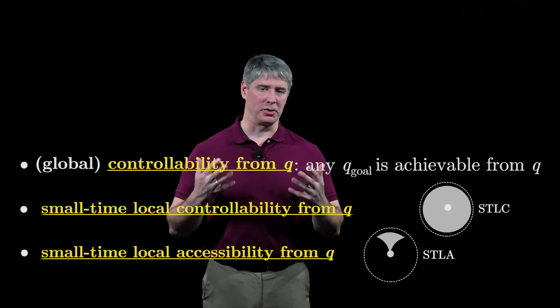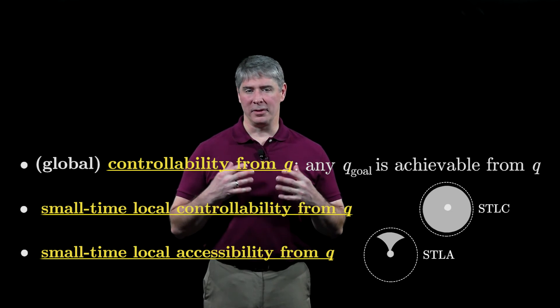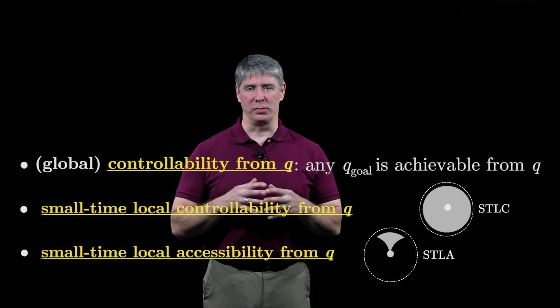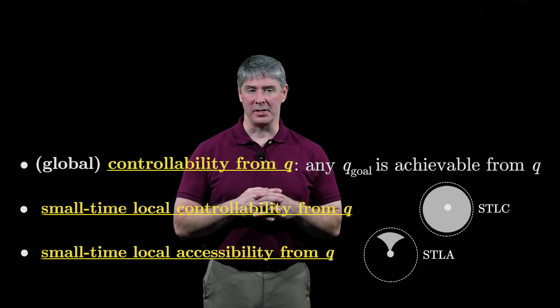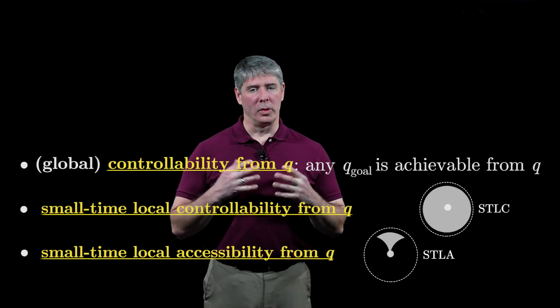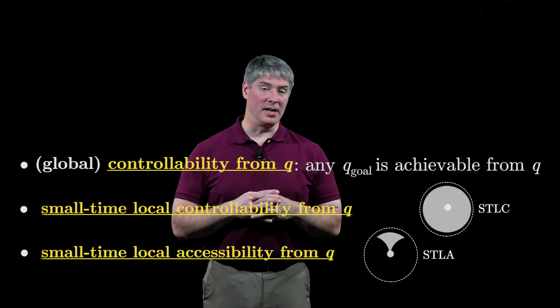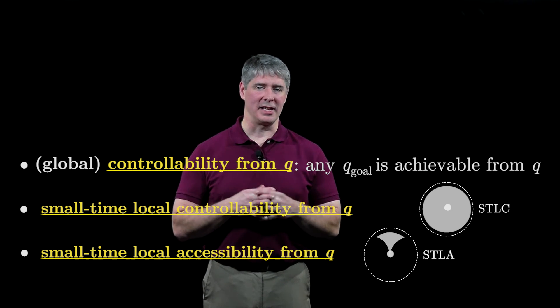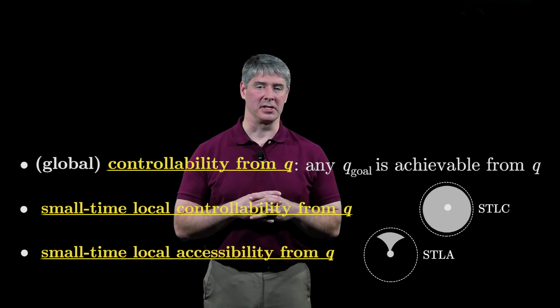If a robot with velocity constraints satisfies any of these three controllability conditions, then the velocity constraints do not integrate to equality constraints on the configuration, and therefore the constraints are non-holonomic. When we say that a mobile robot is non-holonomic, we imply that it satisfies at least one of these three controllability definitions.